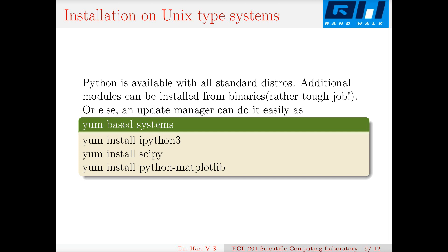For installation on a Unix-type system: Python is available in all Linux distributions like Ubuntu, Fedora, or Debian — both 2.7 and 3, though Ubuntu has stopped supporting 2.7. Additional modules can be installed via the update manager. For RPM-based systems like Fedora or Red Hat, you become root and type: yum install ipython3, yum install scipy, yum install python-matplotlib, and it fetches everything from the repositories.